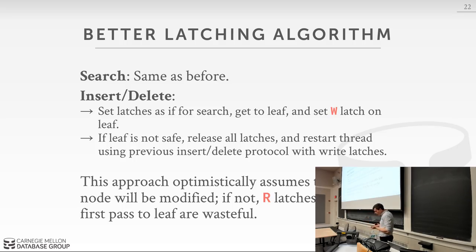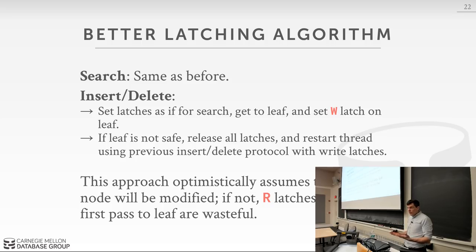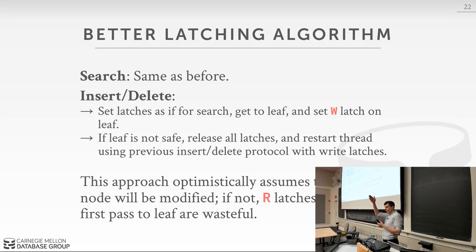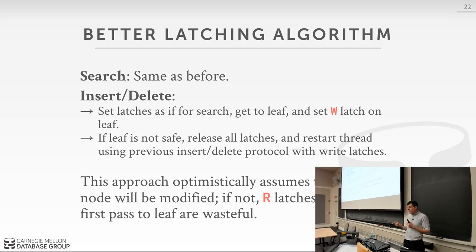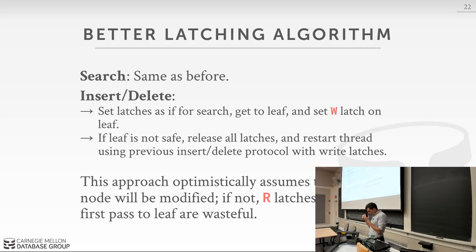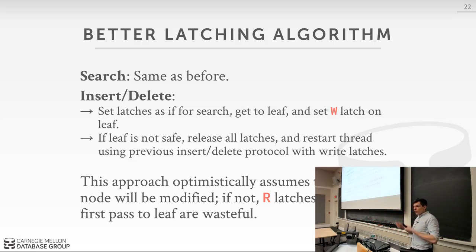This is optimistic because it assumes splits and merges are rare, saving work and improving parallelism. But if you're wrong you're actually worse off — you did your traversal with read latches, reached the bottom, found the leaf isn't safe, and now have to abort and redo everything. That first traversal was wasted work. There are optimizations using hints about what's below in the tree, but the less accurate your approximations, the more wasted cycles.